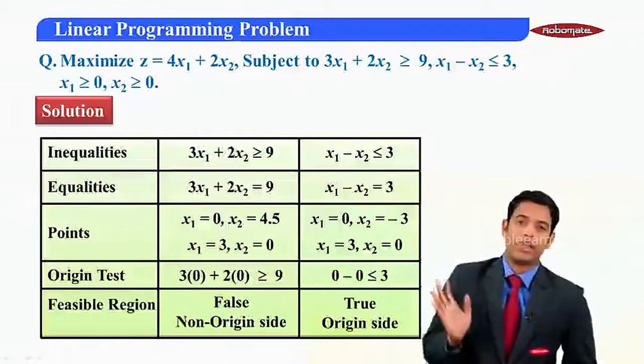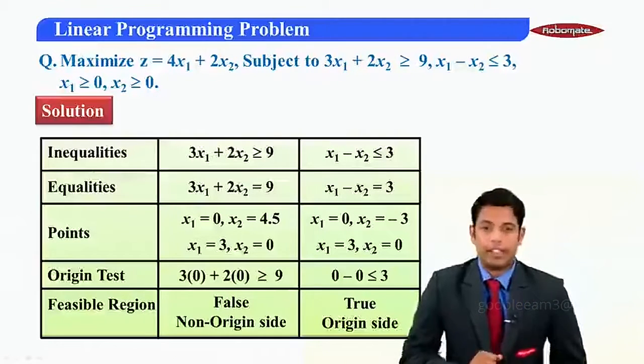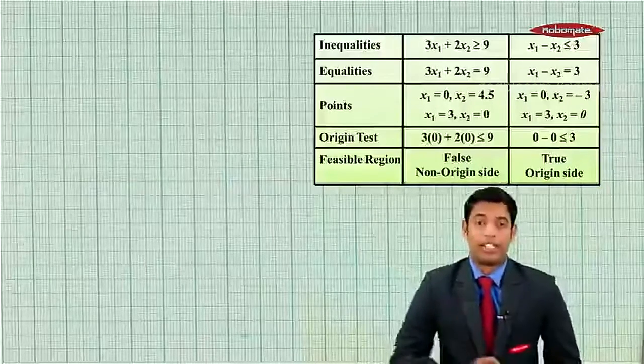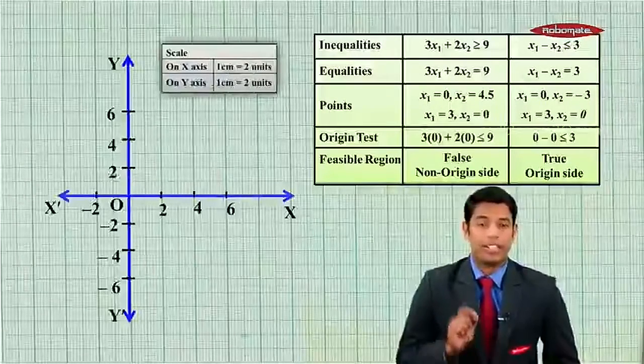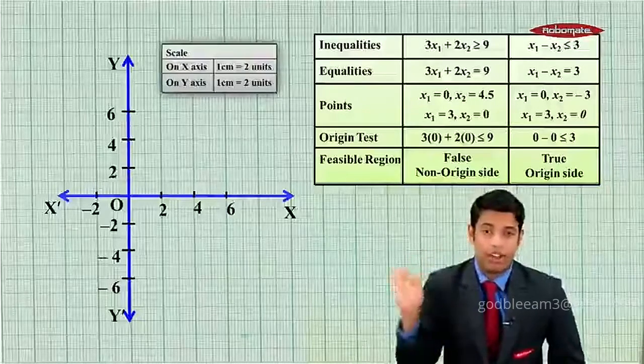Hence the feasible region will be obviously on origin side for this second inequality. With this table now we'll draw our graph. That is, we'll plot our lines on the graph.